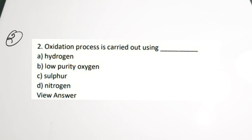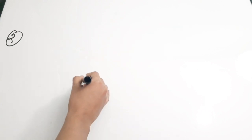In this video, we will be discussing more on the steps of IC fabrication. Question number 2: Oxidation process is carried out using dash. Options: A - Hydrogen, B - Low purity oxygen, C - Sulfur, D - Nitrogen. The oxidation process is carried out in the presence of high purity oxygen and high purity hydrogen. Out of the given options, you can only choose hydrogen because we can only use high purity oxygen and hydrogen. So the correct answer is A, which is hydrogen.